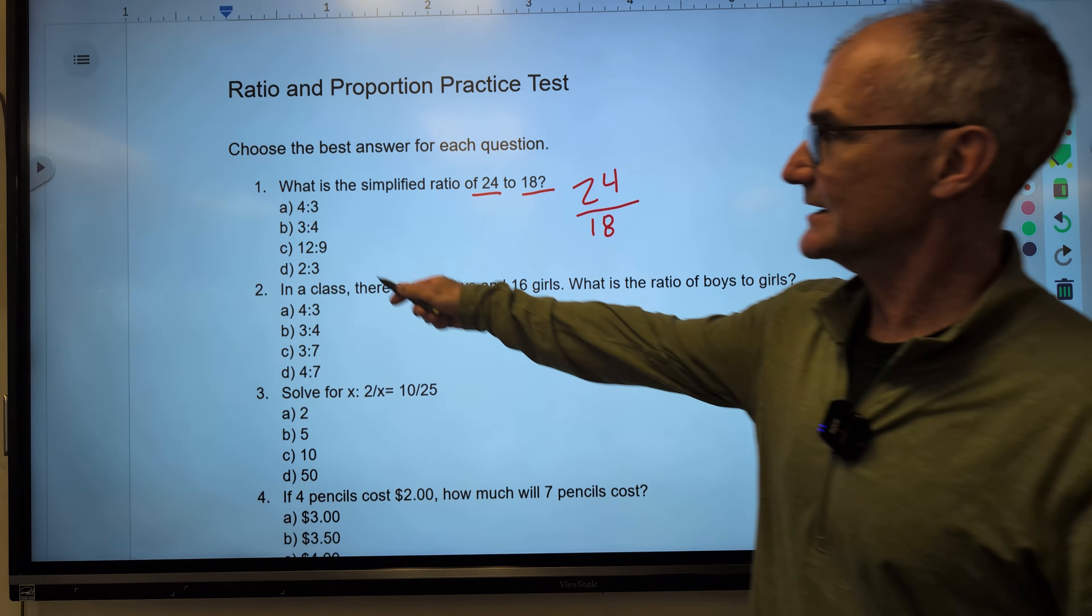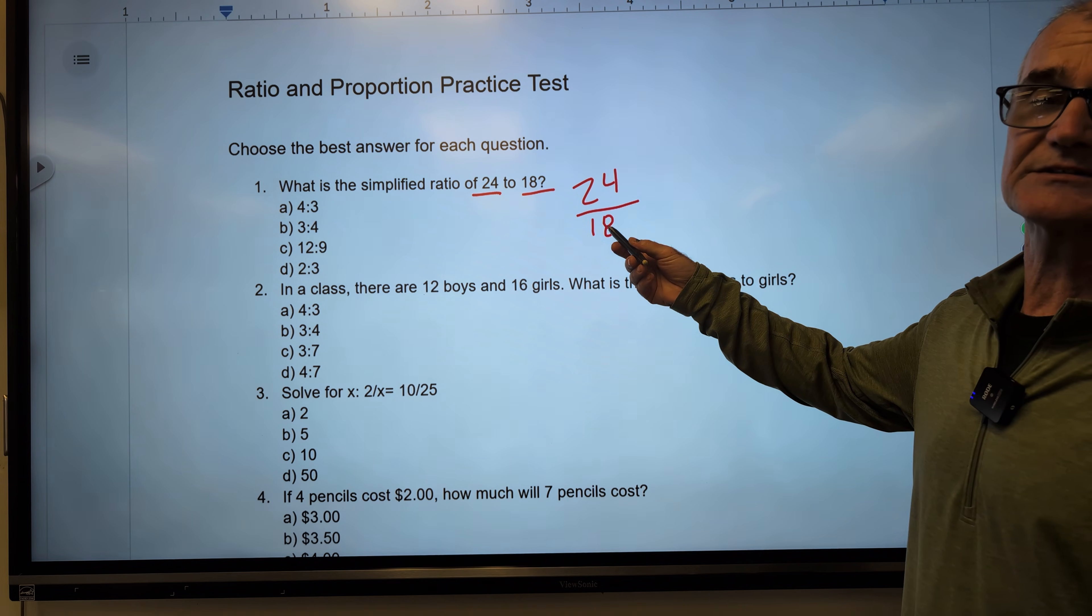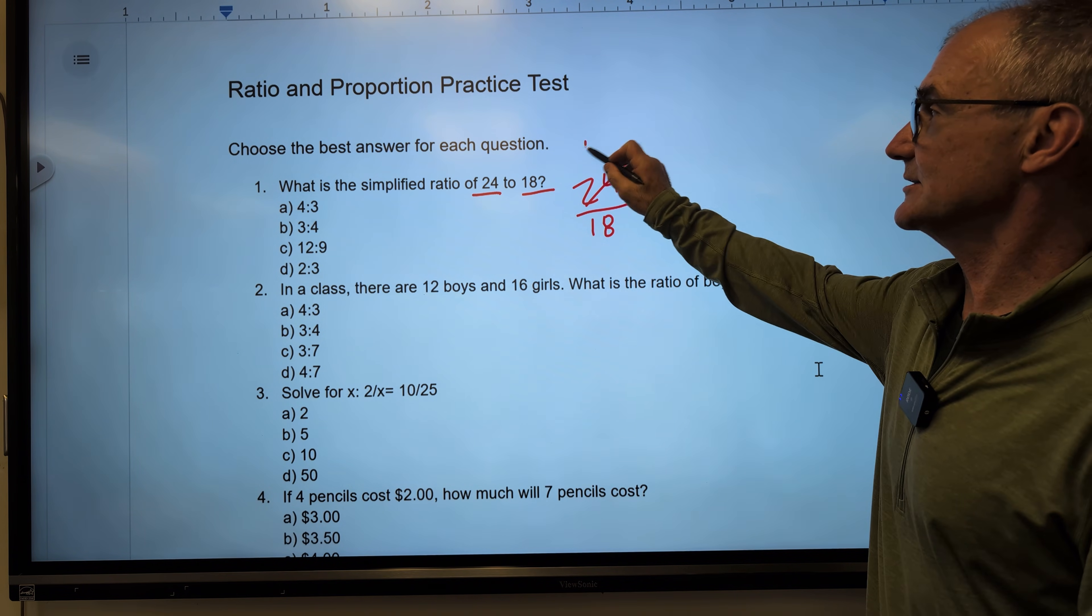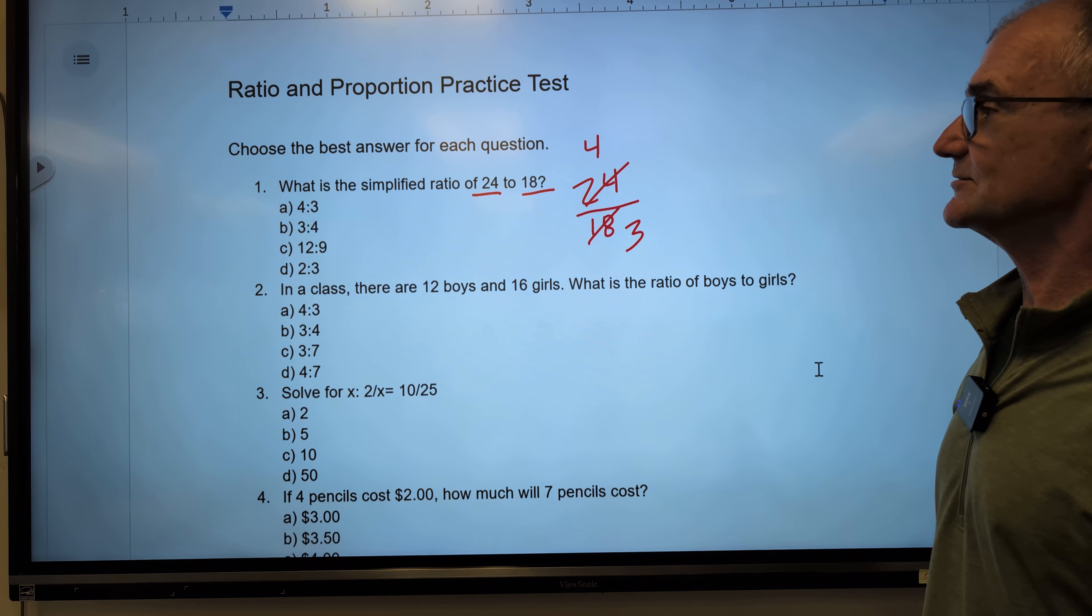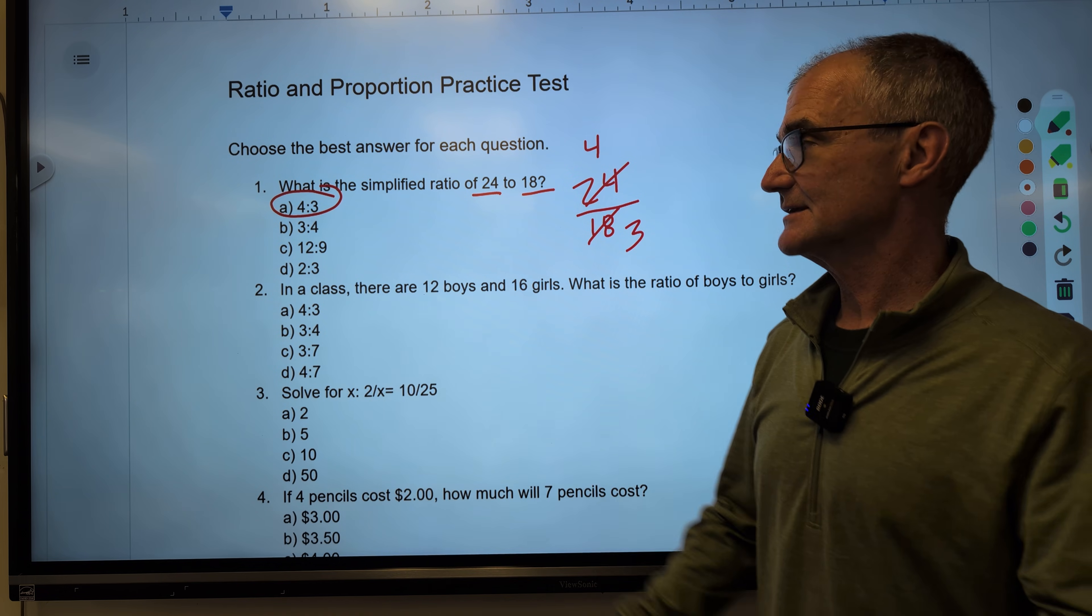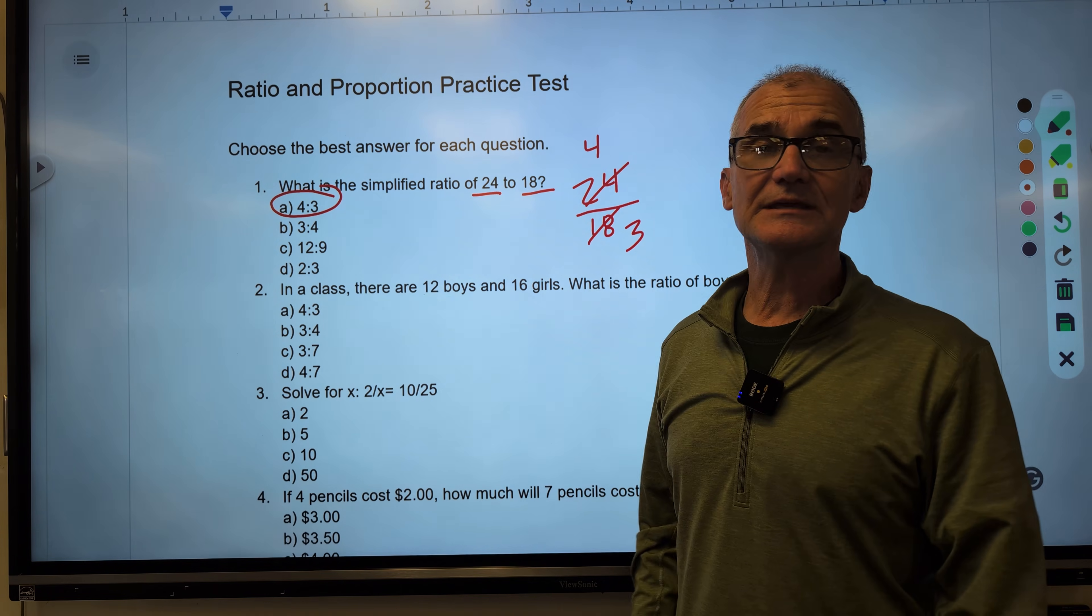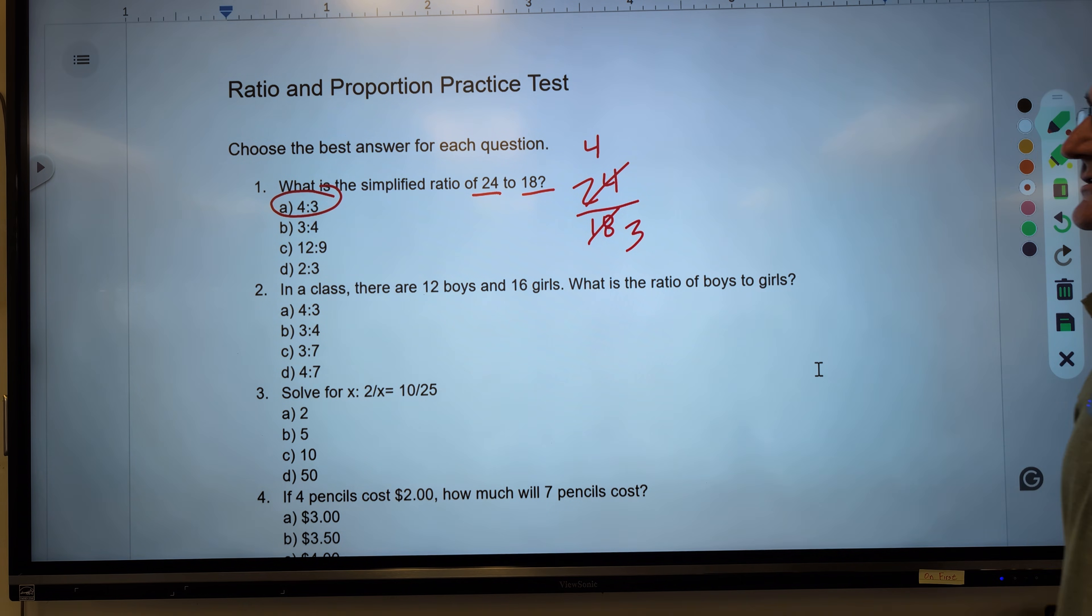That is saying 24 to 18. I look over at my answers. None of them are there. I recognize it is divisible by 6. 6 will go in here 4 times. In the 18, 3 times, giving me 4/3. Correct answer, answer A. Natural distractor B. But remember, it's in the order that the sentence is in.